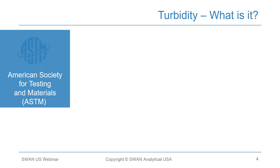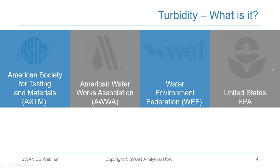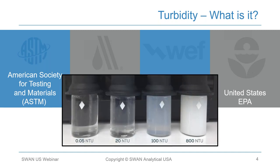Turbidity is defined by the American Society for Testing of Materials as a measure of scattered light that results from the interaction between a beam of light and a particulate material in a liquid sample. The American Water Works Association and the Water Environment Federation define it as the cloudiness of water caused by suspended particles such as clays and silts, chemical precipitates such as iron and manganese, and organic particles such as plant debris and organisms. The EPA describes it as a measure of the cloudiness of water — ranging from ultra clear at 0.05 NTU or less up to high turbidity levels seen in raw water.